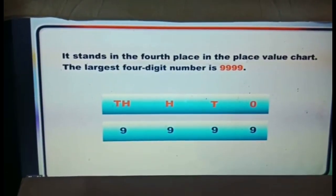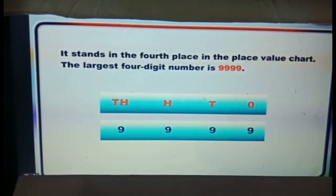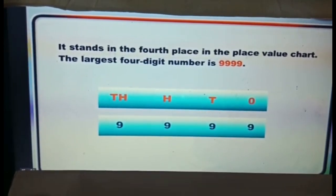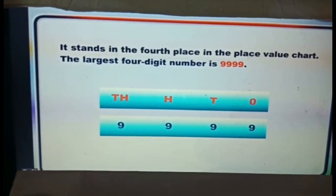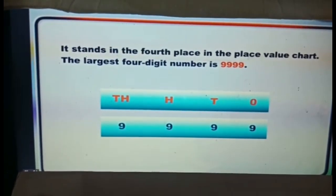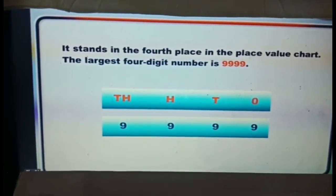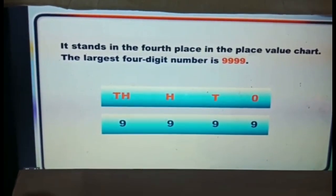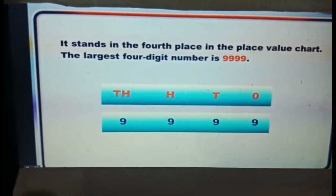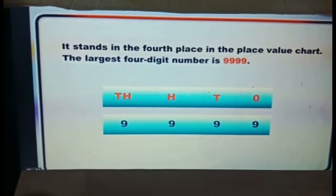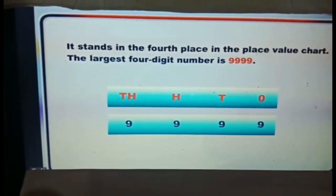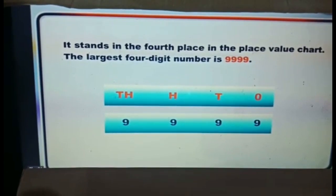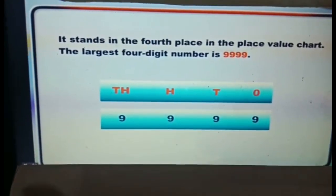The 4-digit number stands in the 4th place in the place value chart. The largest 4-digit number is 9999. We write 9 in the place of ones, 9 in the place of tens, 9 in the place of hundreds, and 9 in the place of thousands.